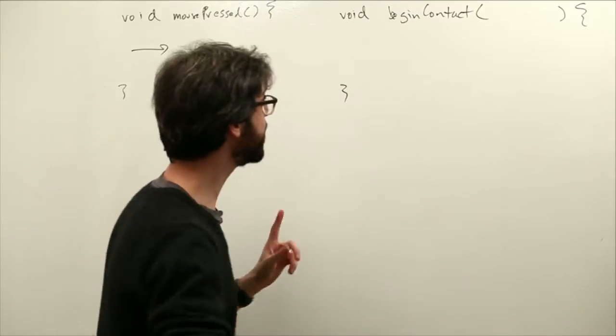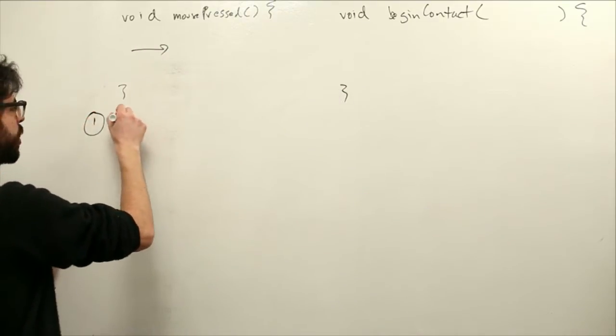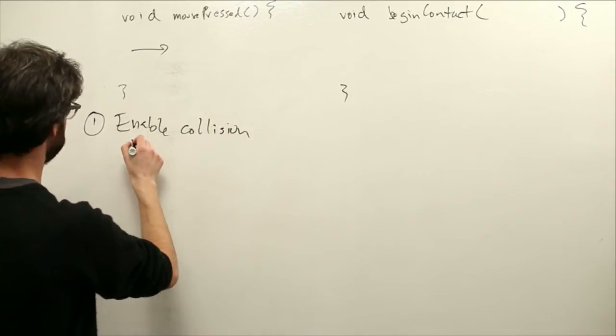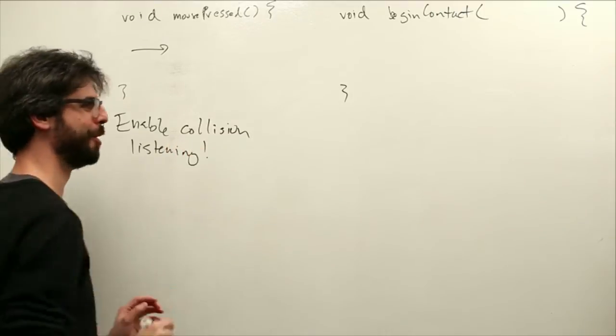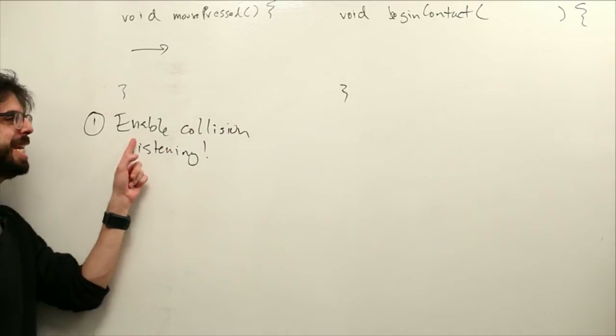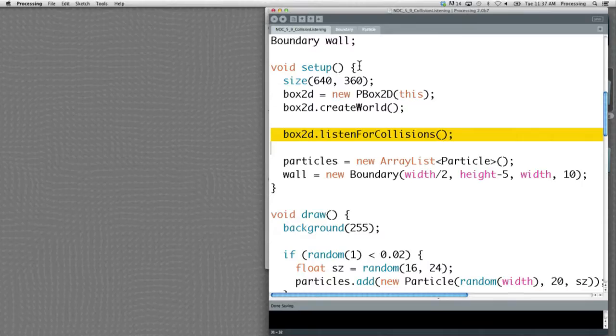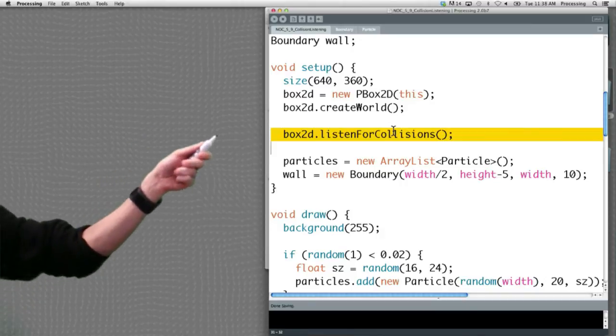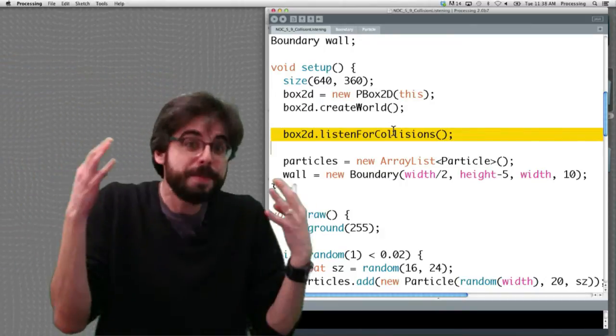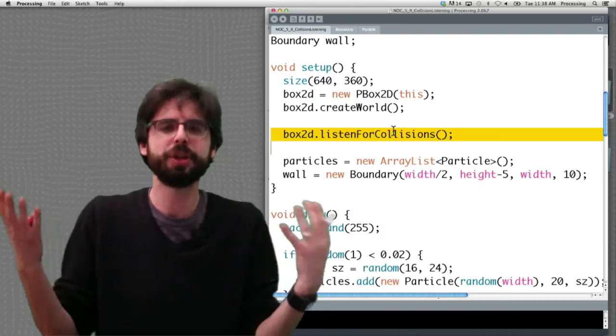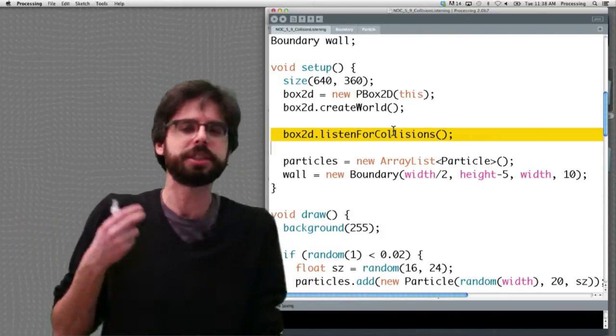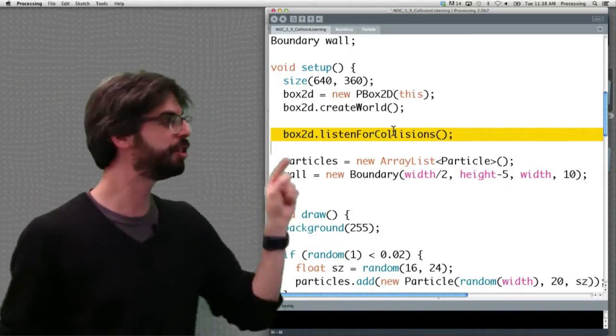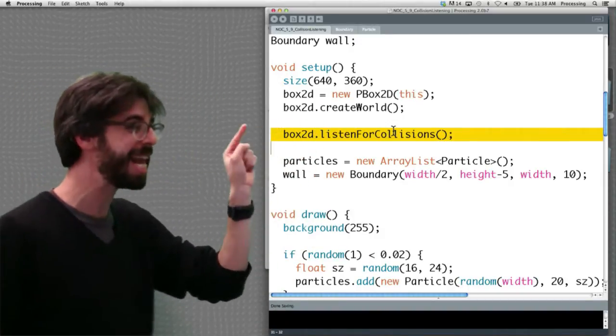So there's a couple steps. One thing that's really simple is we must enable collision listening. If I go to an example that we're about to look at, we can see this is as simple as adding one line of code in setup. Box2D.listenForCollisions. This tells the pbox2d library that you would like to listen for collisions. The reason why this isn't on by default is there's some extra overhead in managing this. So why have it on if you're not going to use it?